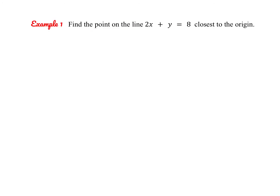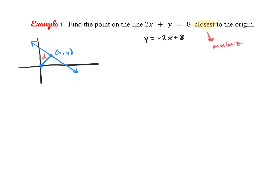Let's give this first one a try together. We're going to find the point on the line that is closest to the origin. We have the linear equation y = -2x + 8, and if you sketch a quick picture, the y-intercept is at 8 and the slope is negative 2. They want us to find any point on the graph — I'll call it (x, y) — that is closest to the origin. The word 'closest' gives us a hint: we want to minimize the distance d between the origin and our line.